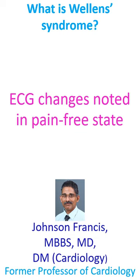Wellens syndrome has been classified into type A and type B. Type A is characterized by biphasic T waves in leads V2 and V3, while type B is characterized by deep T wave inversion in the same leads.